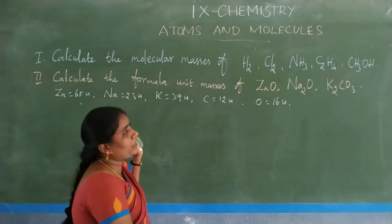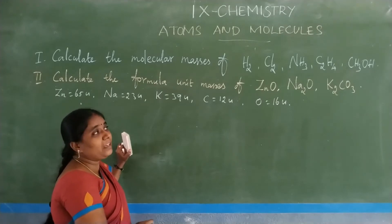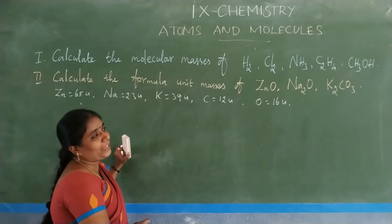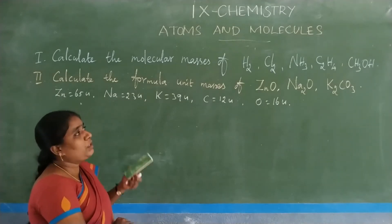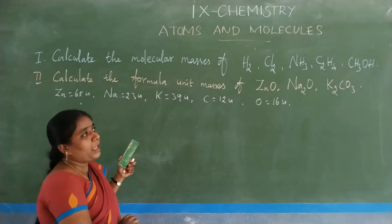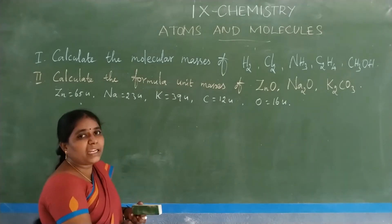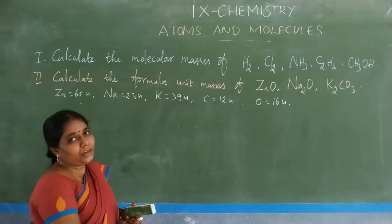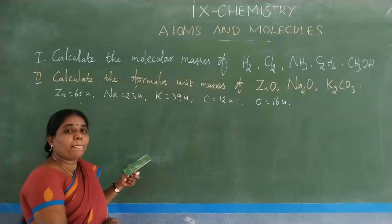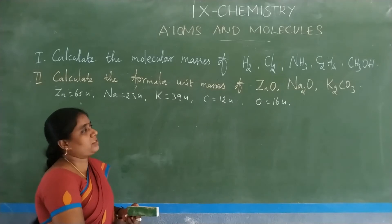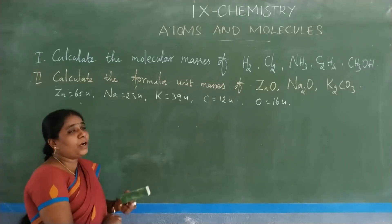The compounds we will calculate are: H2 (hydrogen), Cl2 (chlorine), NH3 (ammonia), C2H4 (ethene), and CH3OH (methanol or methyl alcohol). Next, we also need to calculate the formula unit mass of zinc oxide, sodium oxide, and K2CO3 (potassium carbonate). Formula unit mass is calculated the same way as molecular mass — by summing atomic masses — but we use it for ionic compounds.